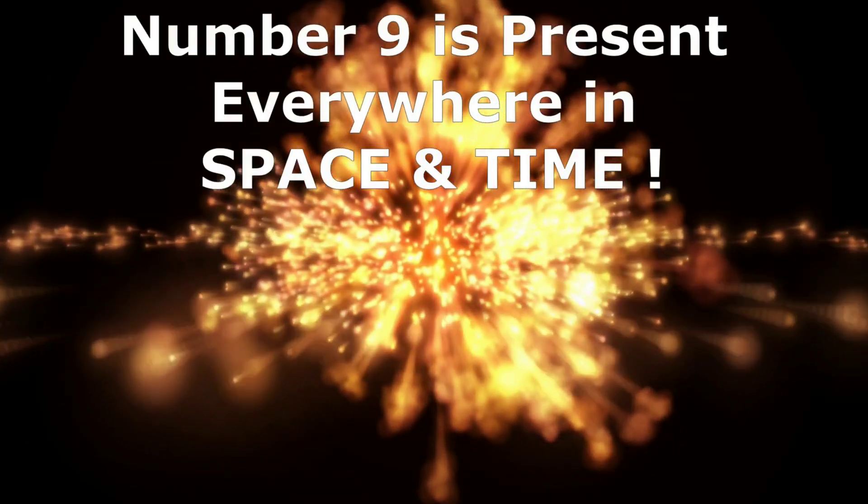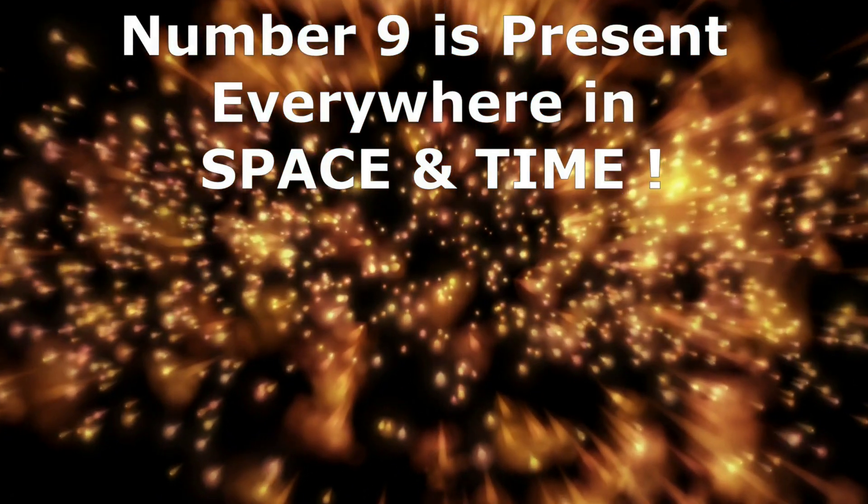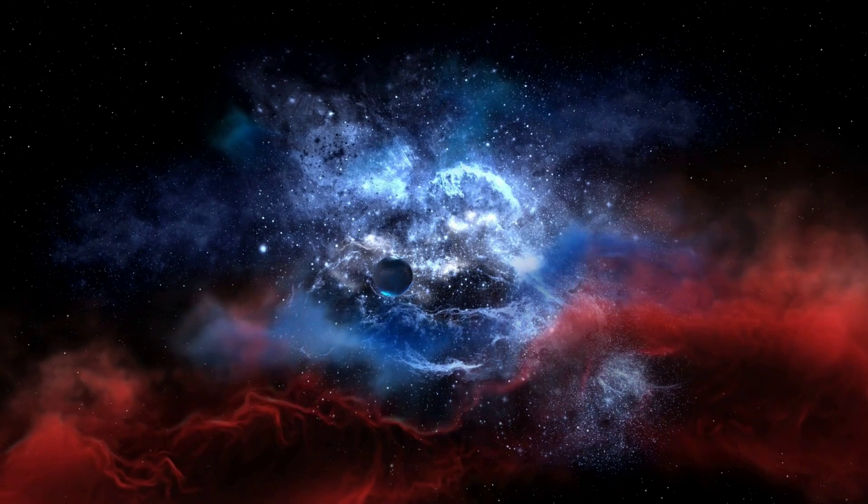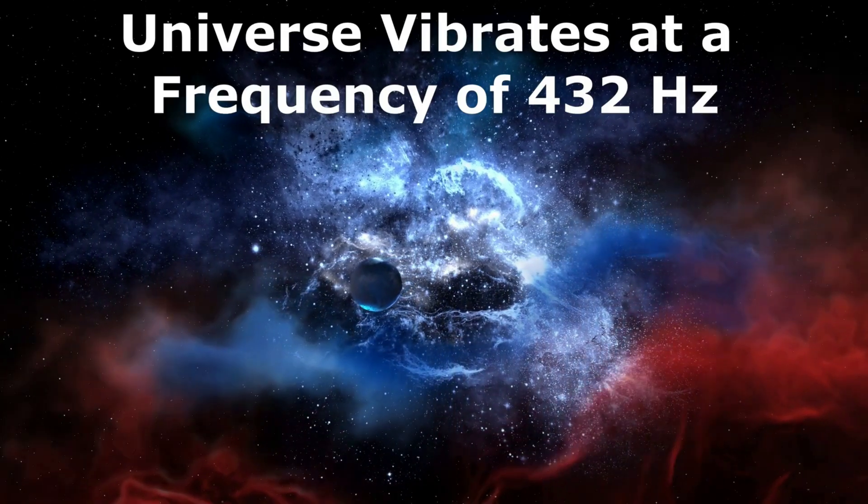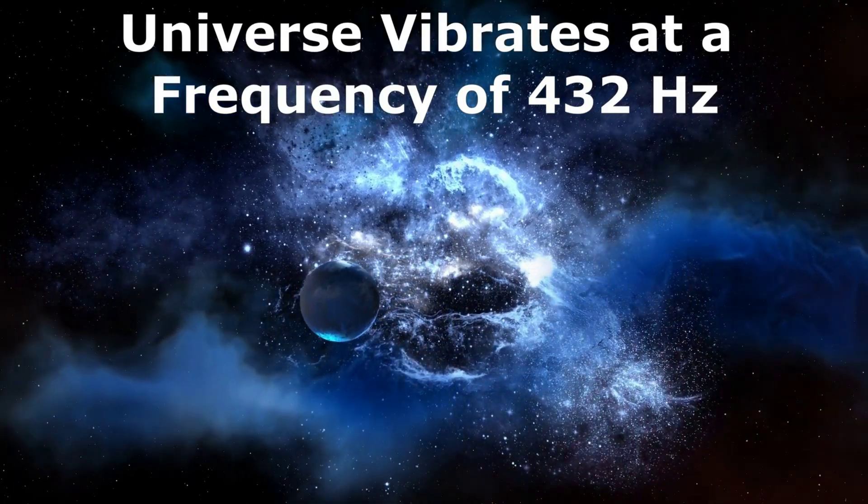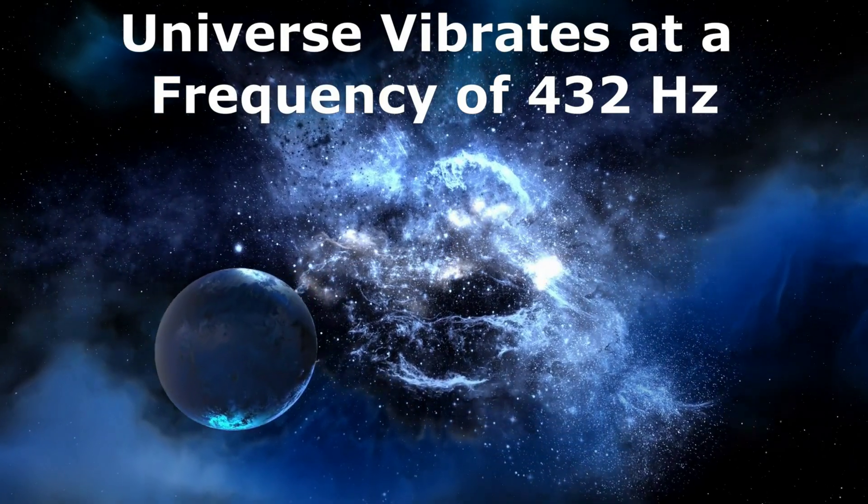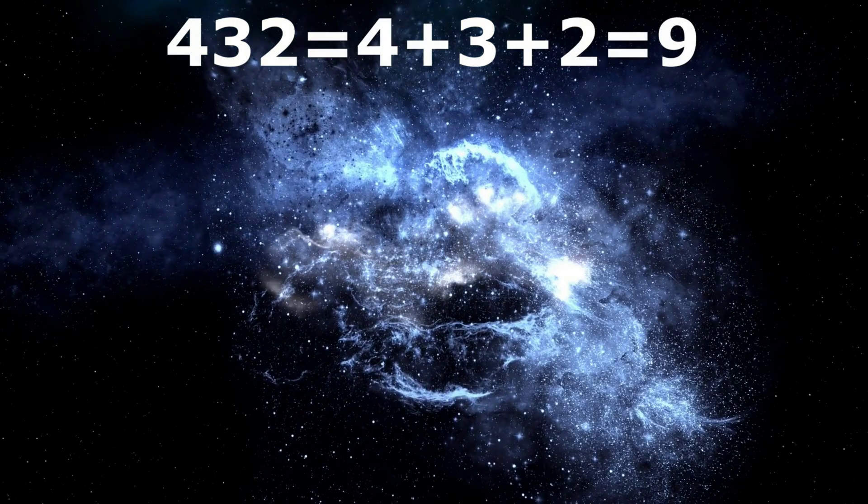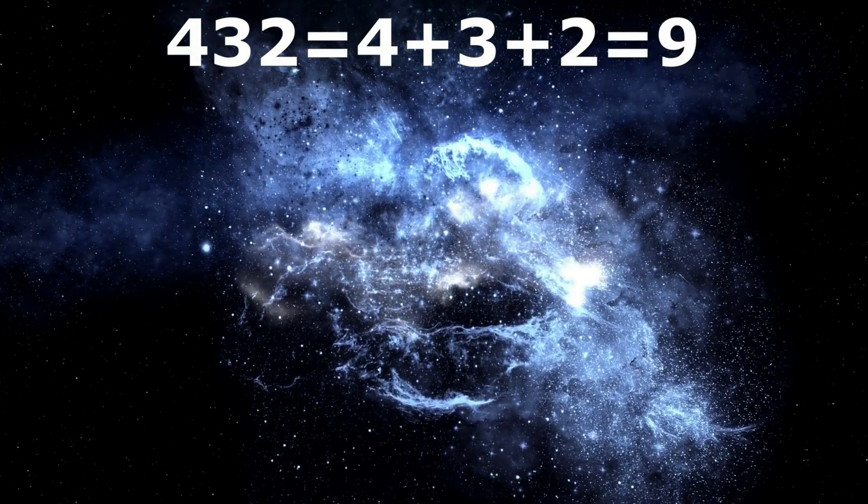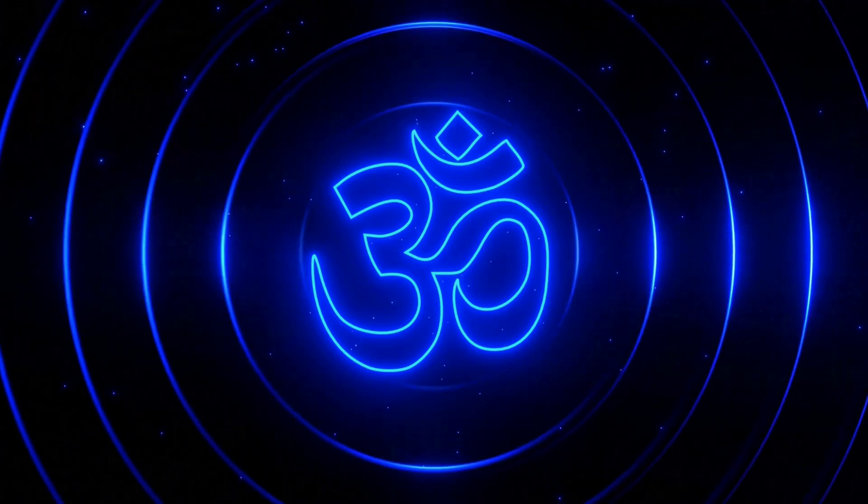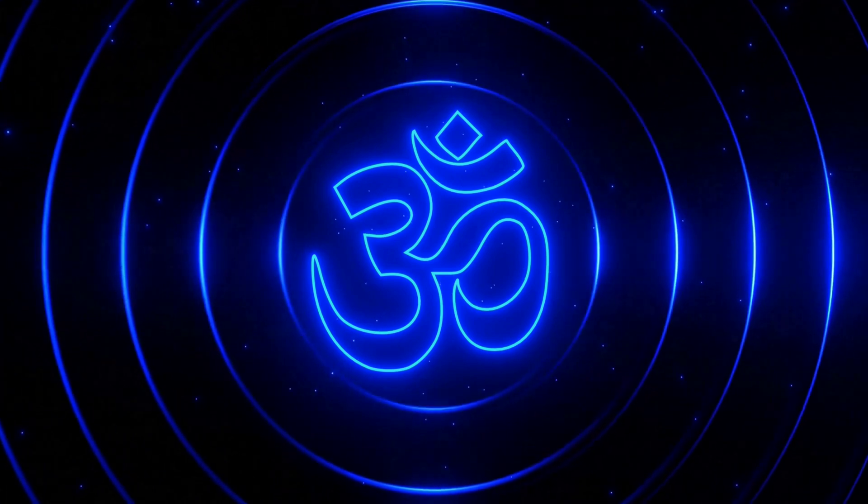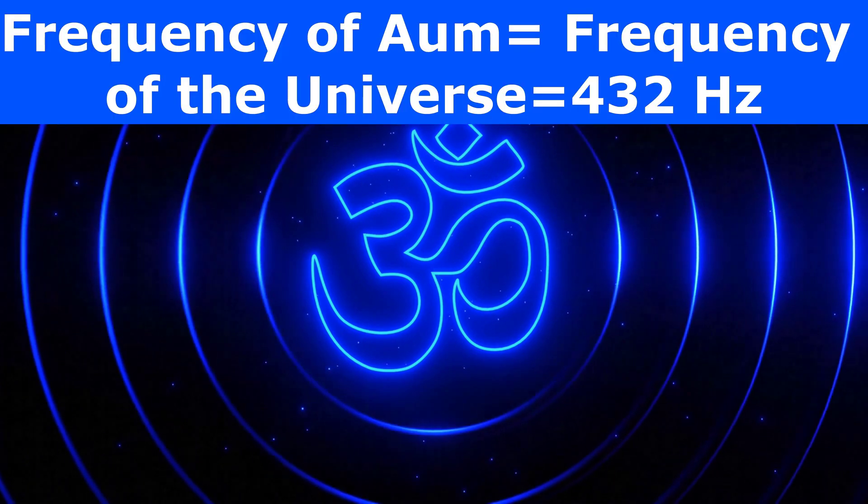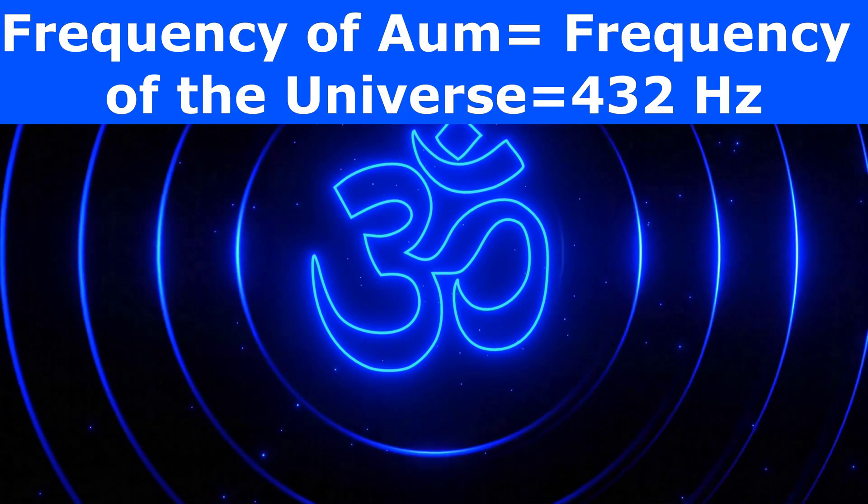It proves that number nine is present everywhere in space and time, and it also controls them. Researchers have discovered that the universe vibrates at a frequency of 432 hertz. Interestingly, this frequency can also be reduced to the number nine. When the well-known symbol of Om is pronounced correctly, it produces a frequency of 432 hertz, which is the same at which our universe vibrates.